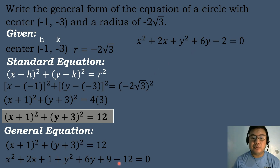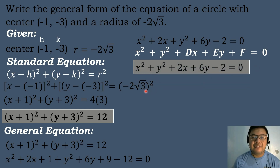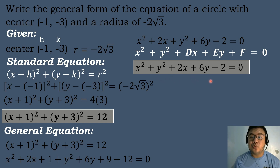We combine like terms: bring down x squared plus 2x plus y squared plus 6y, then add the constant terms: 1 plus 9 plus negative 12 equals negative 2. Arrange in the general form x squared plus y squared plus dx plus ey plus f equals 0. The result is x squared plus y squared plus 2x plus 6y minus 2 equals 0. So the general form of the equation of a circle with center (negative 1, negative 3) and radius negative 2 square root of 3 is x squared plus y squared plus 2x plus 6y minus 2 equals 0.